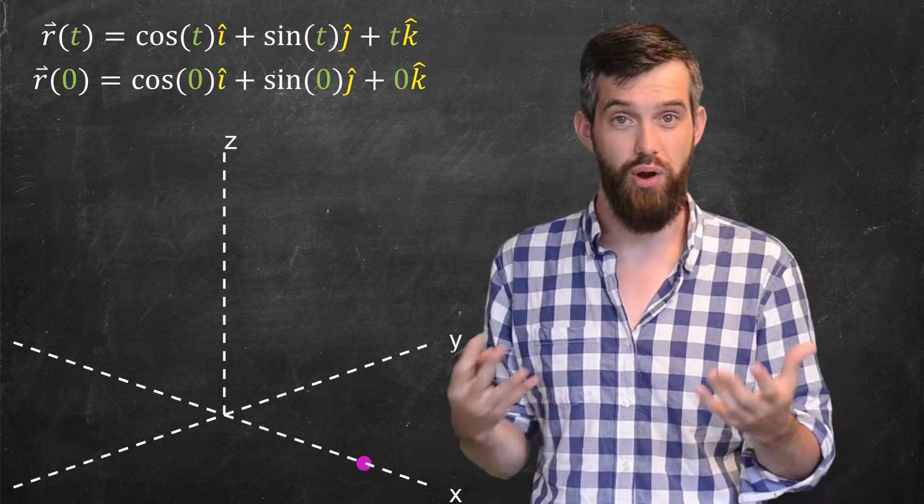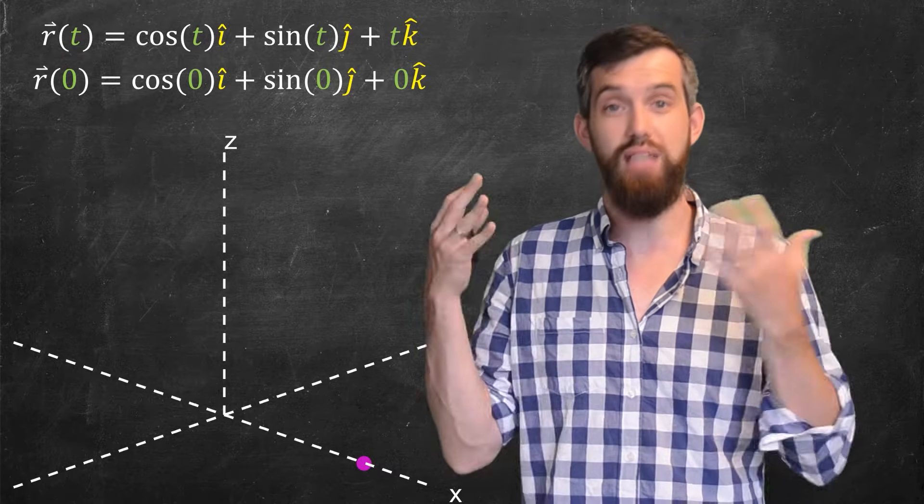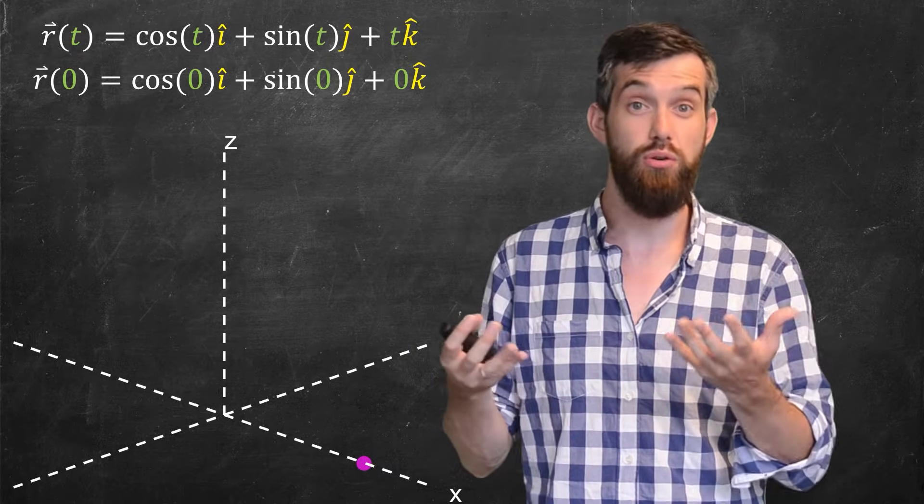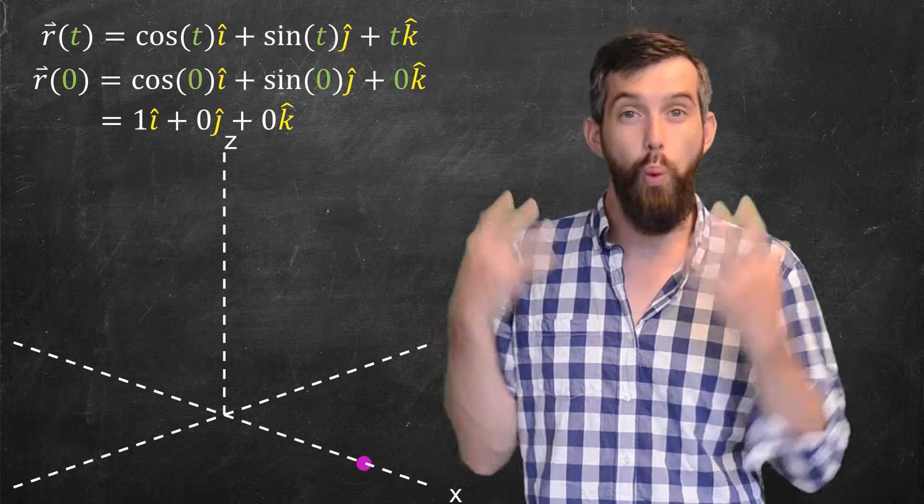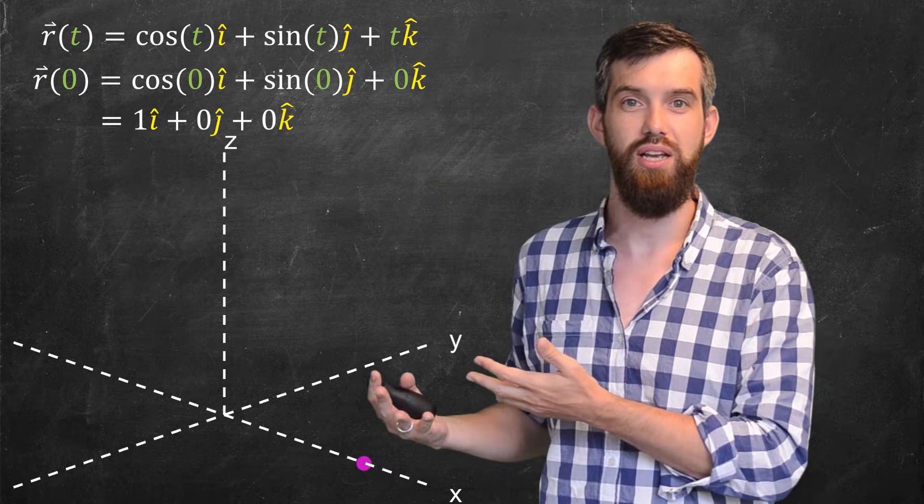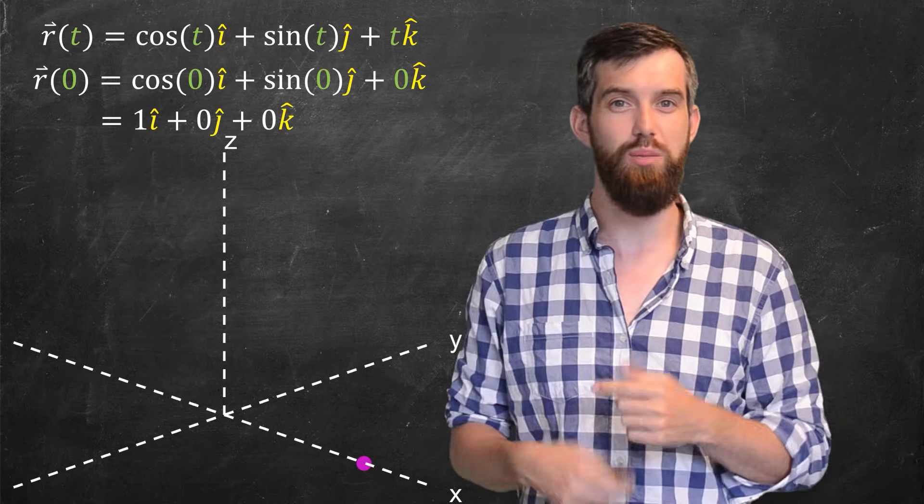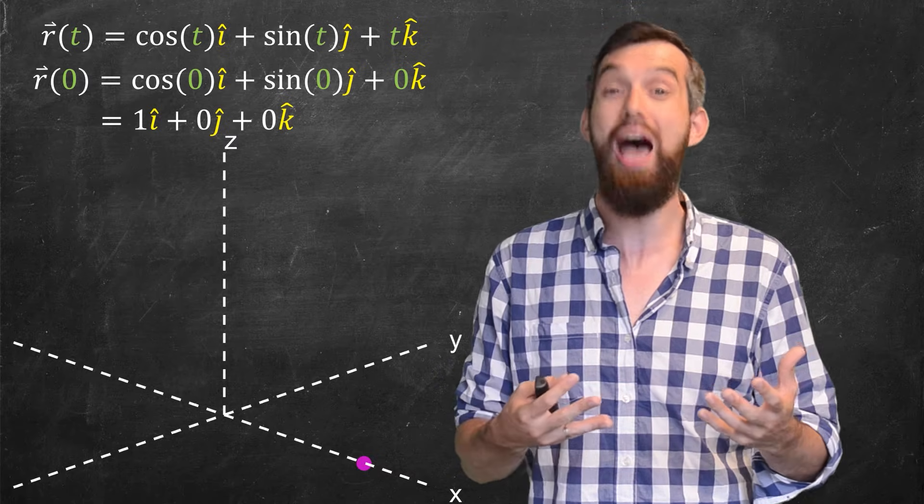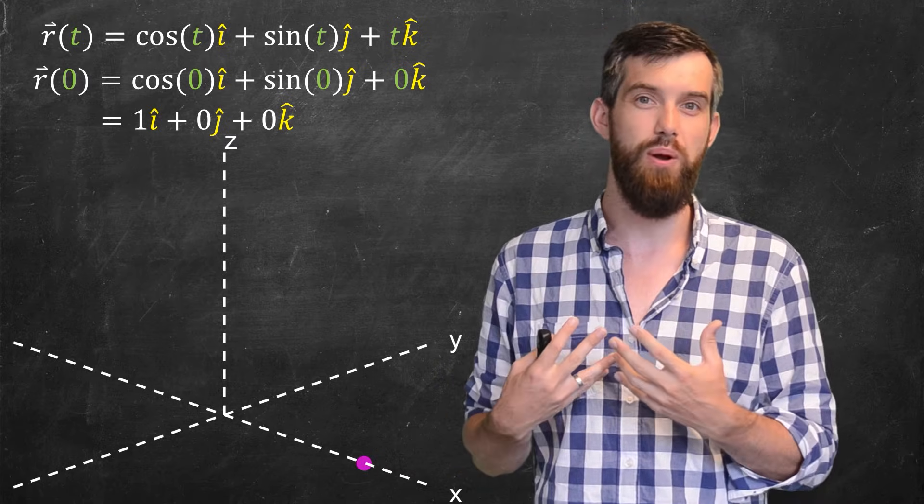So I've got r of zero, cos of zero is just one, sin of zero is zero, and just zero of course is zero. So what do I have? 1 in the i-hat and nothing else. So this pink dot represents the point 1, 0, 0 that occurs when the input t is equal to zero.